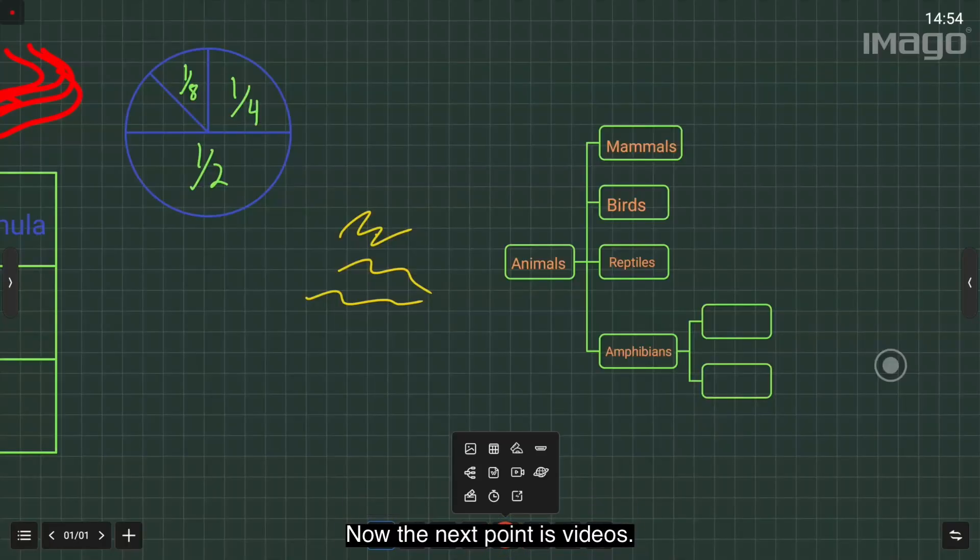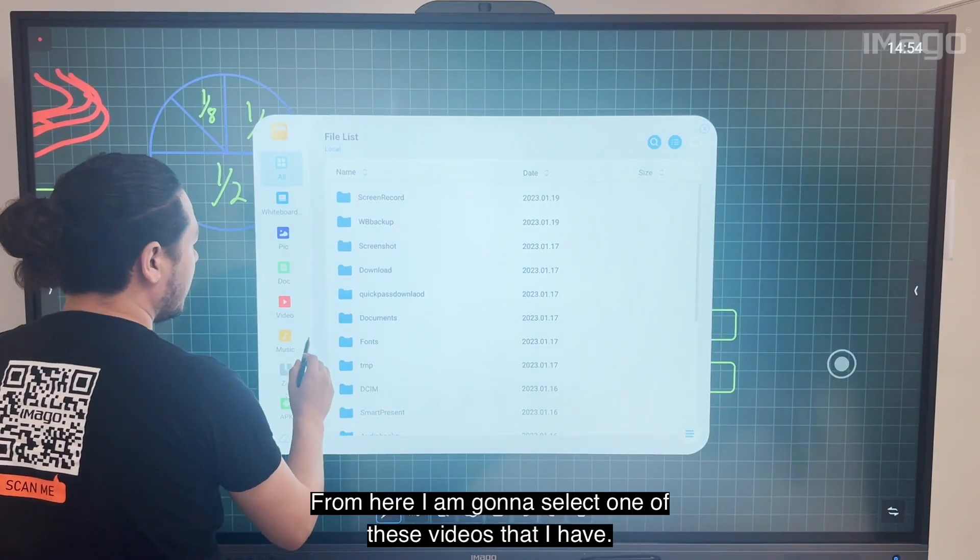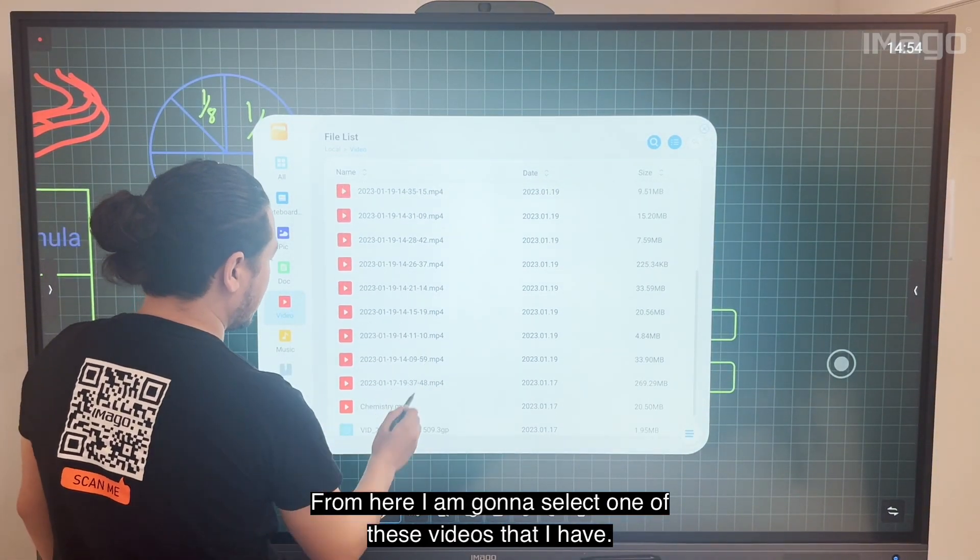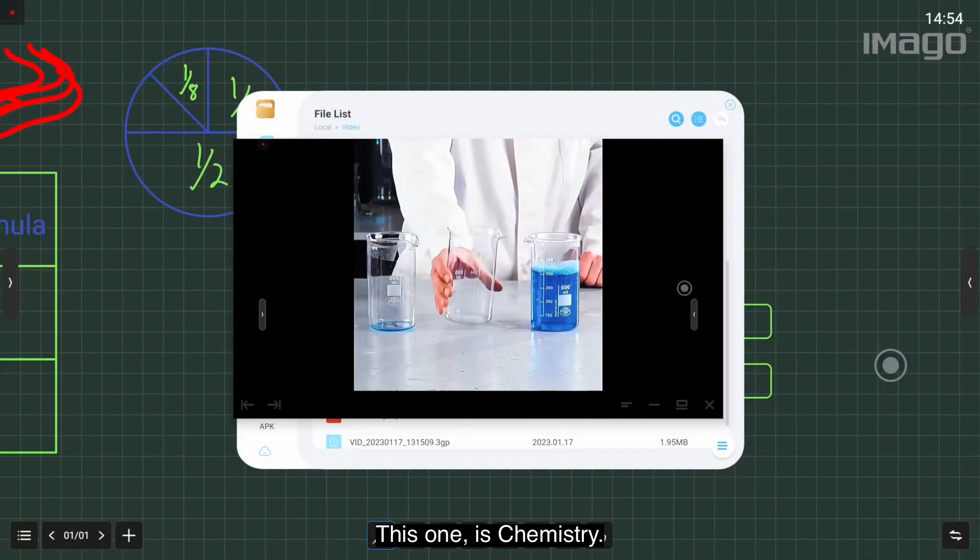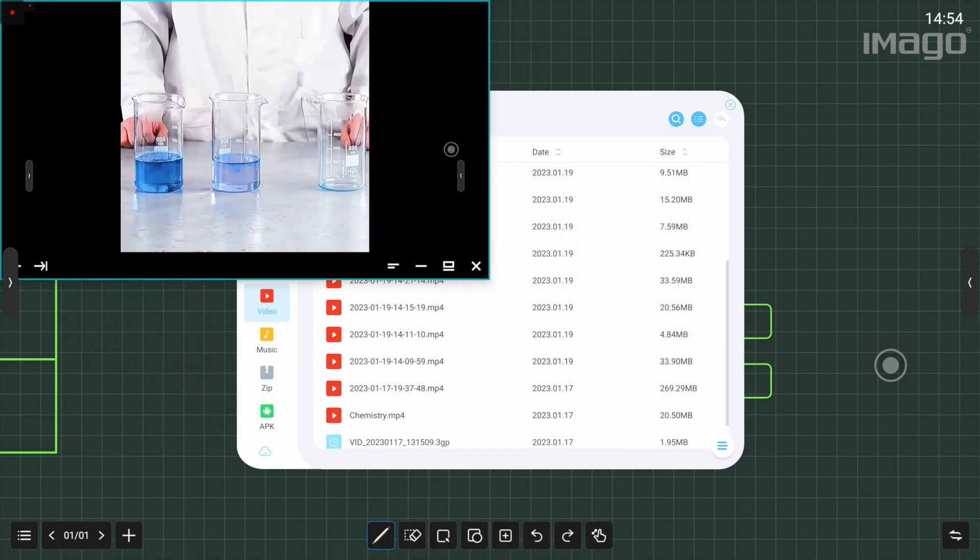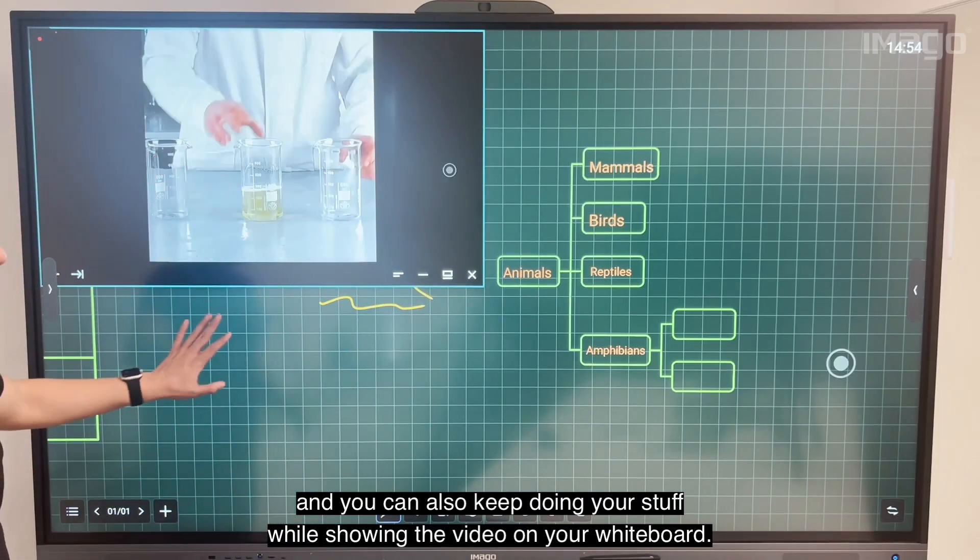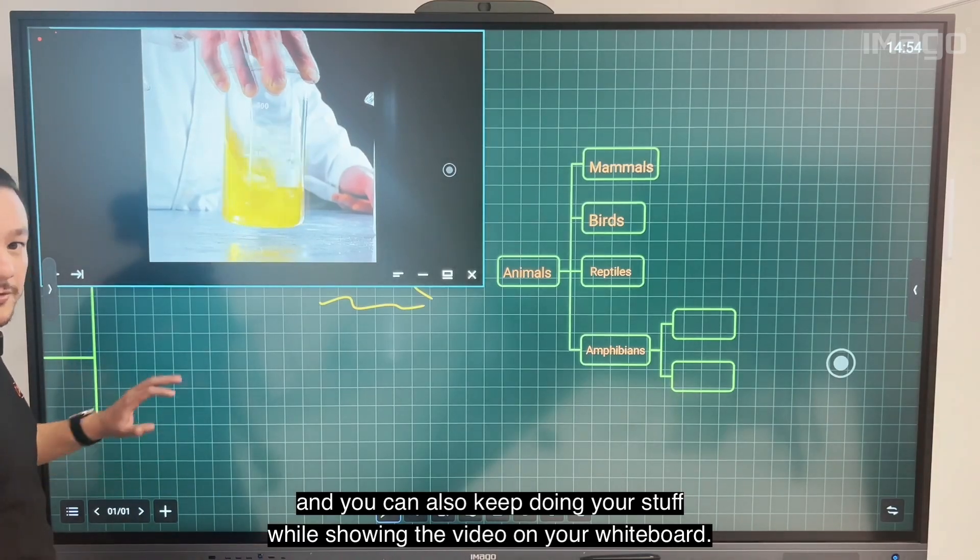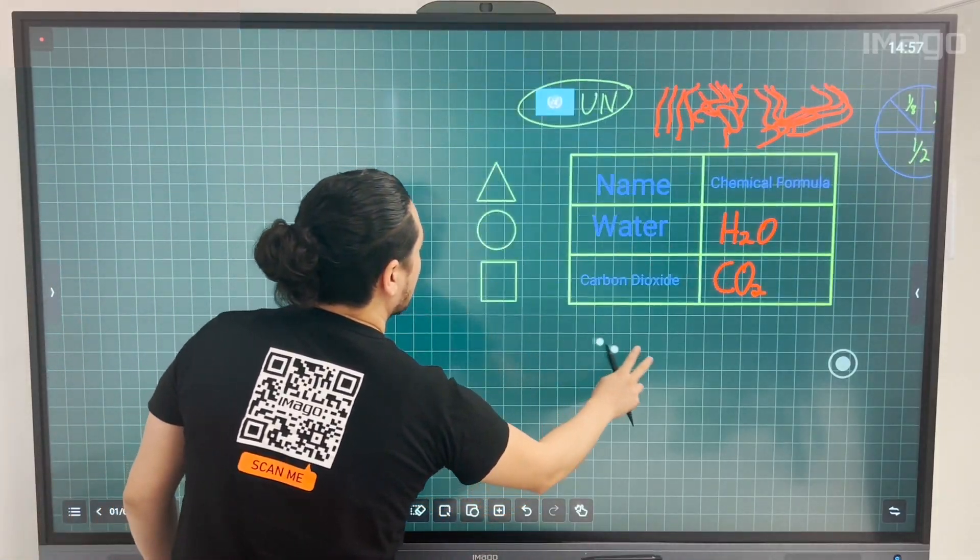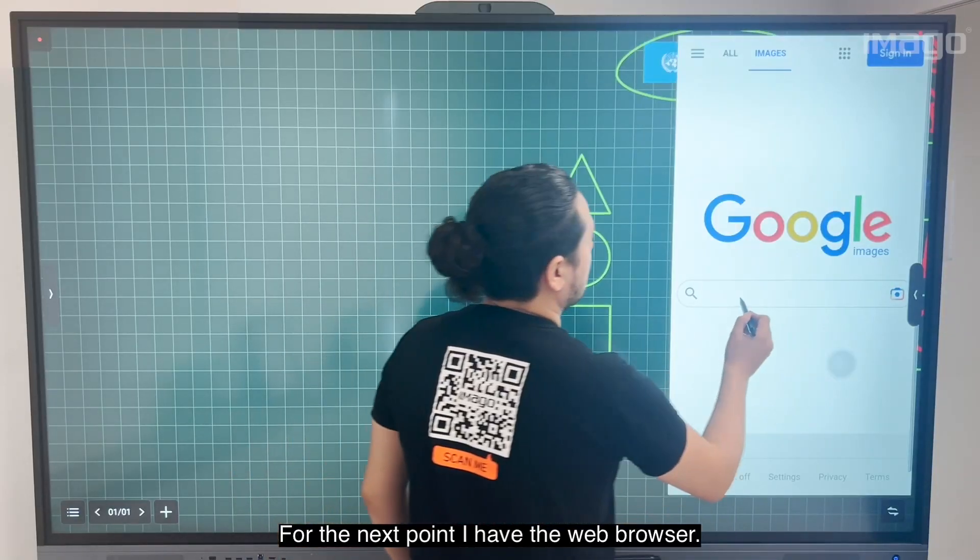Now the next point is Videos. From here I'm going to select one of these videos that I have - this one which is Chemistry. I will drag it to this corner, and you can also keep doing your stuff while showing the video in your whiteboard.